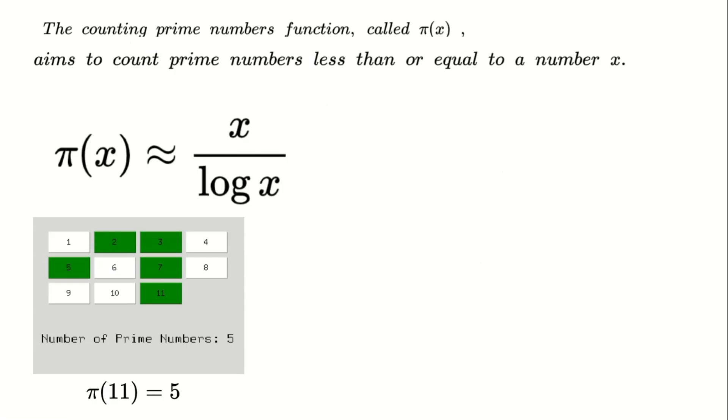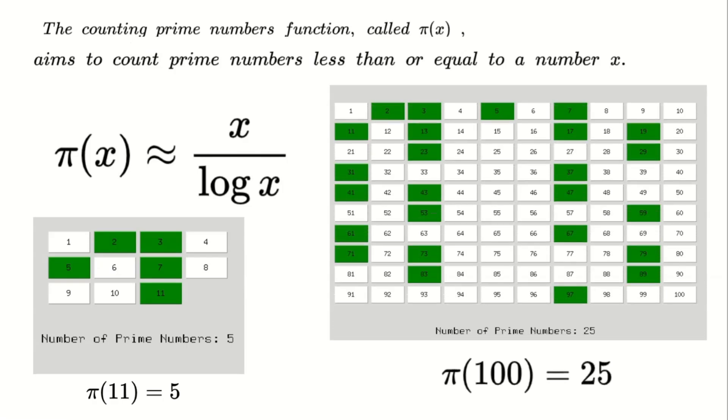Similarly, if we take the number 100, we find that there are 25 prime numbers less than or equal to 100. So π(100) equals 25. This gives us an idea of how prime numbers are distributed across the number line. With this knowledge in hand, let's move on to the next chapter where we'll introduce a new remainder notation to help simplify our prime number formula.